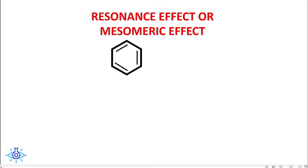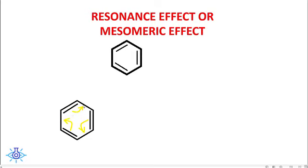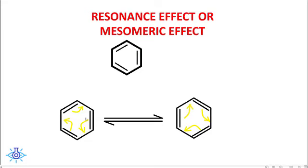Look at benzene — the double bonds are in alternate positions, so it is in conjugation. This is a sign of resonance. The double bonds can shift positions sequentially, forming another resonance form, which reverts back to the original form due to delocalization of the pi electrons.